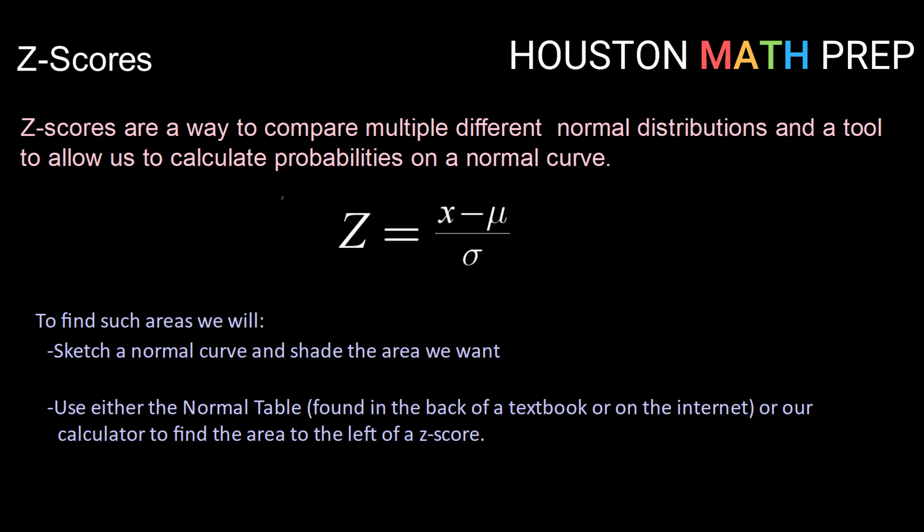Z-scores are a way to compare multiple different normal distributions, but they're also a tool that allow us to calculate the probability using a normal curve. In a continuous probability distribution, the probability and the area under a curve are the same thing. So we're going to use those two terms interchangeably.